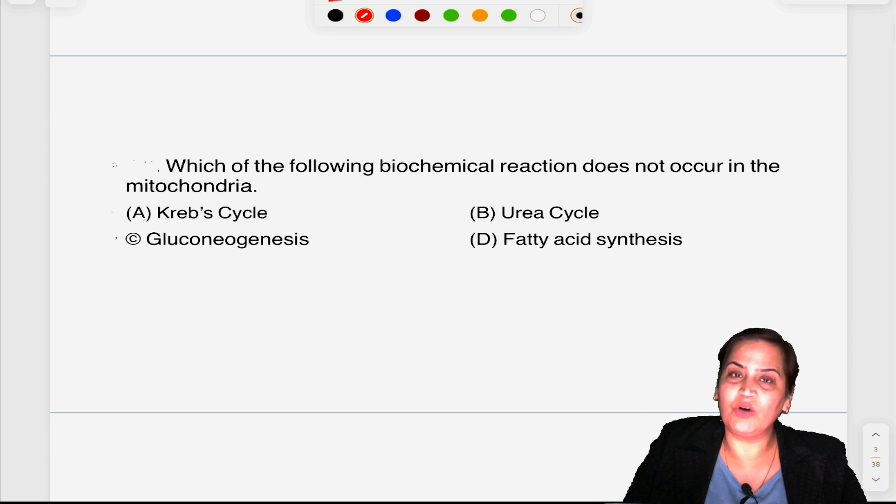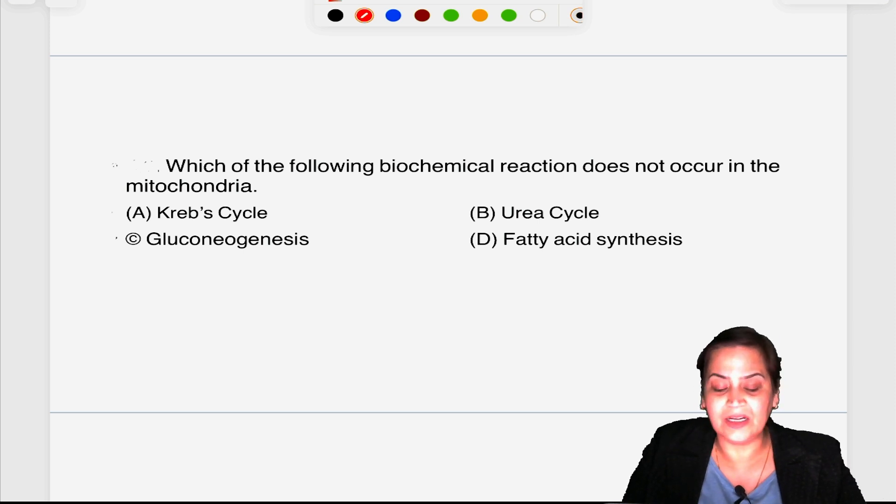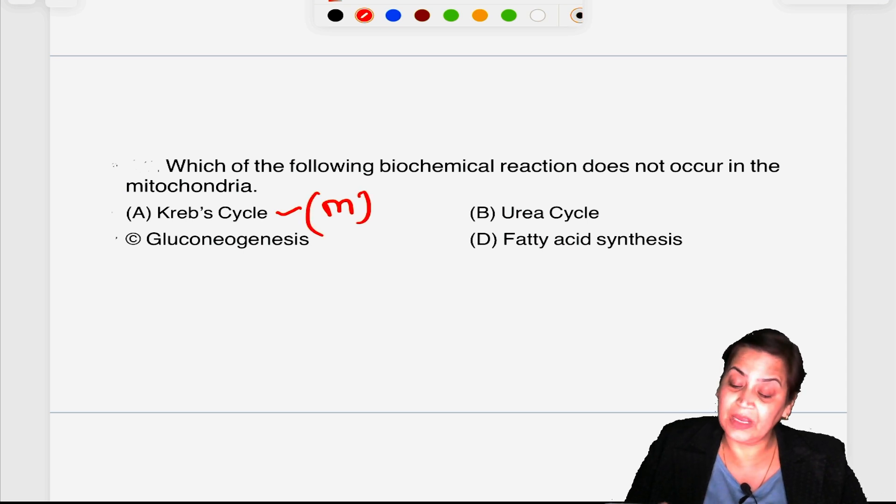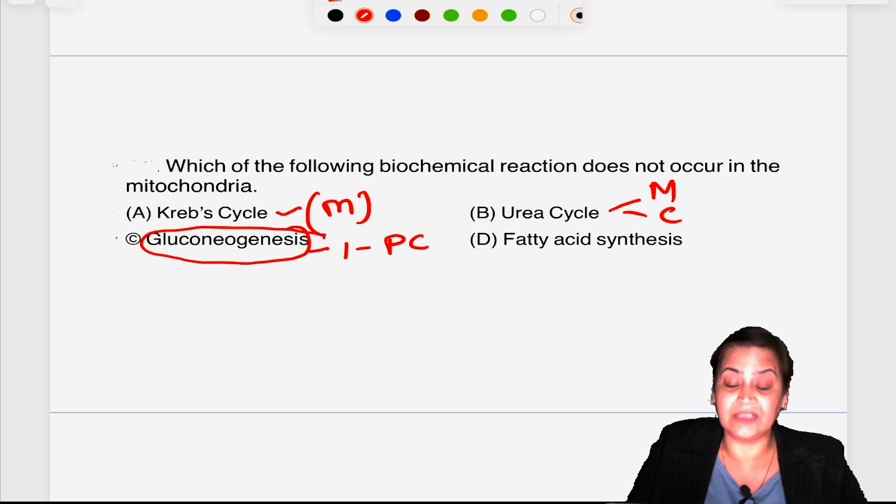Which of the following biochemical reactions does not occur in the mitochondria? This question I have discussed so many times - does not occur in mitochondria. Krebs cycle is aerobic, so it has to be in the presence of mitochondria. Urea cycle has two compartments: first and second step occur in mitochondria, third, fourth and fifth occur in cytoplasm. In gluconeogenesis, the first step with pyruvate carboxylase occurs in mitochondria. So the option left is fatty acid synthesis and that is what exactly happens. The synthesis of fatty acids always takes place in the cytosol.